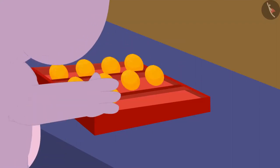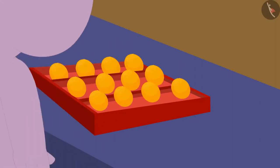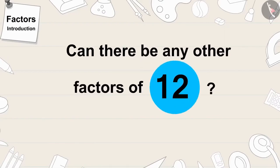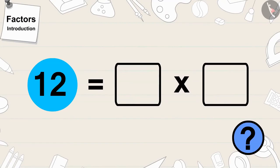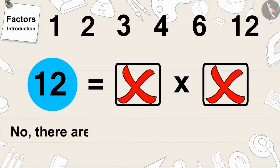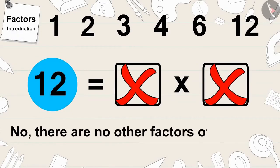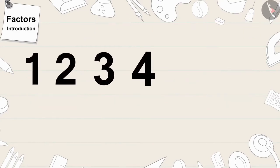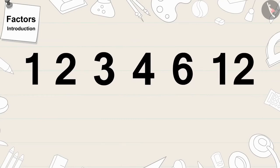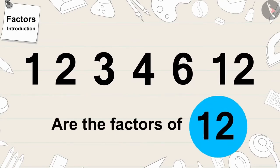Appu filled twelve laddus in Chanda's box. Children, can there be any other factors of twelve? Can we write twelve as a product of any other numbers? If you want, you can stop the video and think about the answer. No, there are no other factors of twelve. One, two, three, four, six and twelve — these numbers are the factors of twelve.